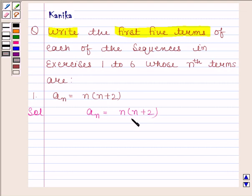Since we need to find the first five terms of the sequence whose nth term is n(n+2), therefore we will put n as 1, 2, 3, 4, and 5.